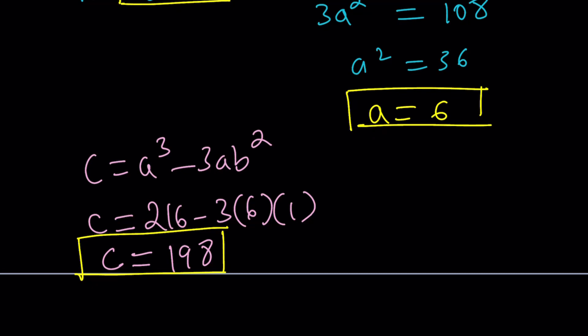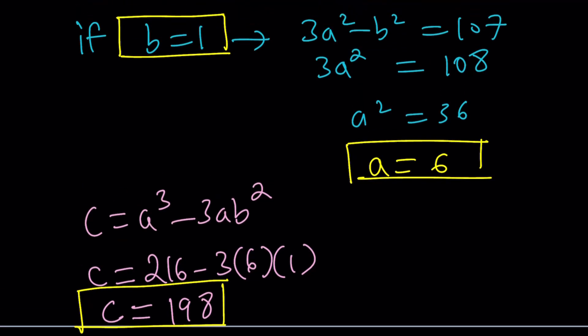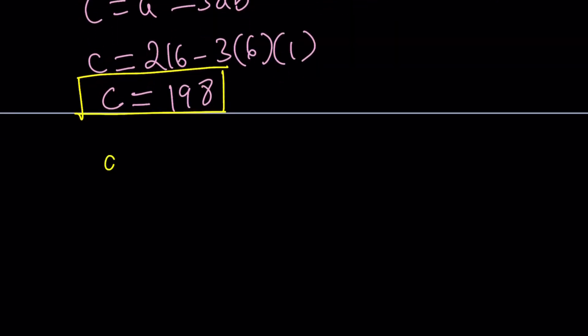So we ended up finding all the values A, B, and C. Since one of the values didn't work, B equals 107, we're only getting a single solution. And let's go ahead and write it as an ordered triple. Don't you love that word? And that's going to be 6, 1, 198.